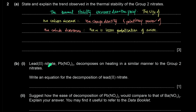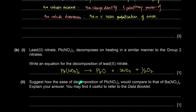Lead(II) nitrate decomposes on heating similarly to group 2 nitrates. Write an equation: Pb(NO3)2 → PbO + 2NO2 + ½O2. Suggest how the ease of decomposition of lead(II) nitrate compares to barium nitrate. From the data booklet, the ionic radius of Pb2+ is less than that of Ba2+.